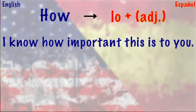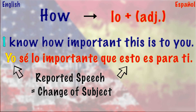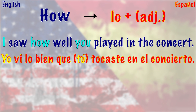'I know how important this is to you' — in Spanish, 'Yo sé lo importante que esto es para ti.' Here we have two different subjects: 'I' and later 'this,' with 'how' in between. In these cases, we translate 'how' using the article 'lo' plus the adjective. 'I saw how well you played in the concert' becomes 'Yo vi lo bien que tocaste en el concierto.' Again, we start with subject 'I,' then 'you,' with 'how' in between — so we use 'lo' plus the adverb.